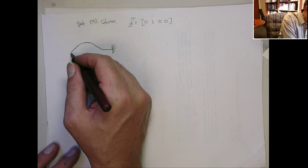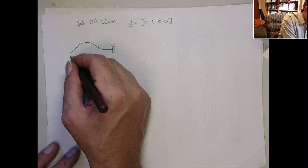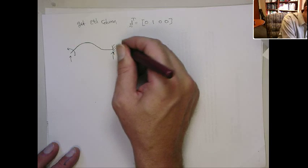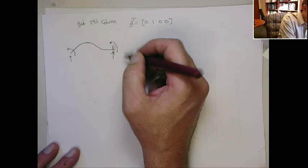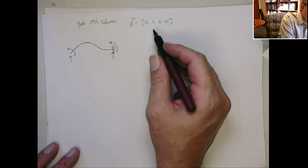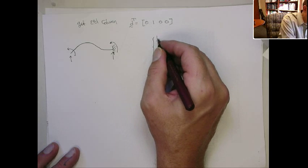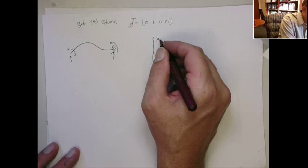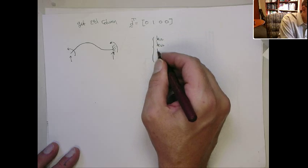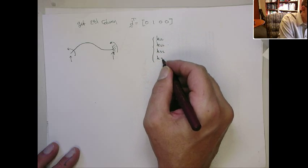All right, so this is what we got. We have a force and a moment here, and also a force and a moment here. When I put this in and multiply it by the stiffness matrix, I just extract the second column, which is K1,2, K2,2, K3,2, and K4,2.